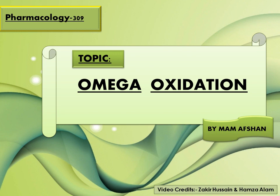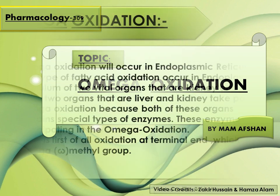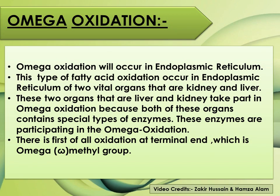Inshallah, when things are normalized with the prayers of all of us for humanity, we will meet again. So I'm starting with omega oxidation of fatty acids. This type of fatty acid oxidation occurs in the endoplasmic reticulum, specifically in two organs — the liver and the kidney — because both these organs contain special types of enzymes participating in omega oxidation. The first step is oxidation at the terminal end, which is the omega methyl group.